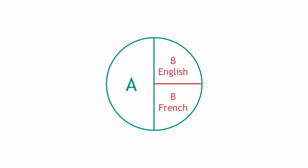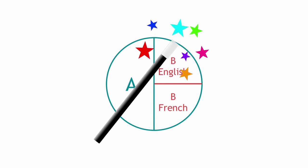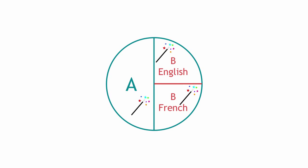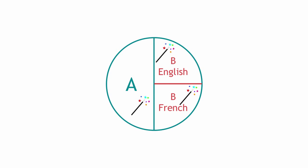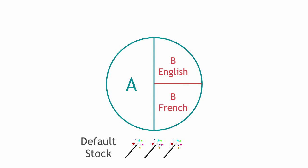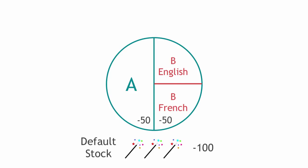Now let us assume we have a product — say, a magic wand — that's sold at all three websites but always shipped from one warehouse. In this case, you can place this item into the so-called default stock in your Magento. Default stock contains products that are not assigned to particular warehouses. No matter which websites these products belong to, their inventory is managed as if they were part of one website. This way, if a customer buys 50 magic wands from website A and 50 magic wands from website B, the total number of magic wands at your default warehouse will be decreased by 100.